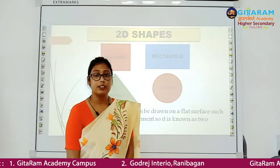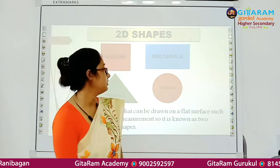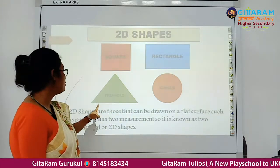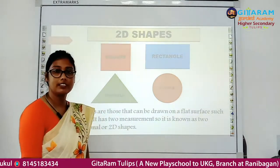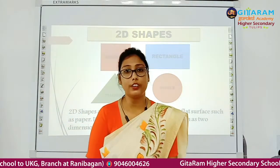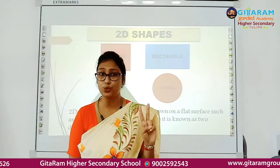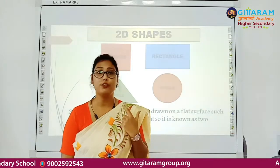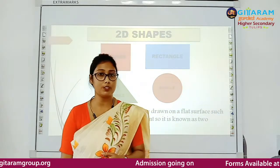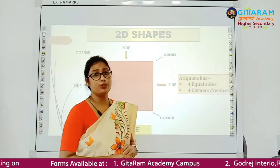2D shapes have two dimensions only — width and length. Here are some examples of 2D shapes: square, rectangle, triangle, and circle. 2D shapes are shapes that can be drawn on a flat surface such as paper. They have two dimensions: length and width.